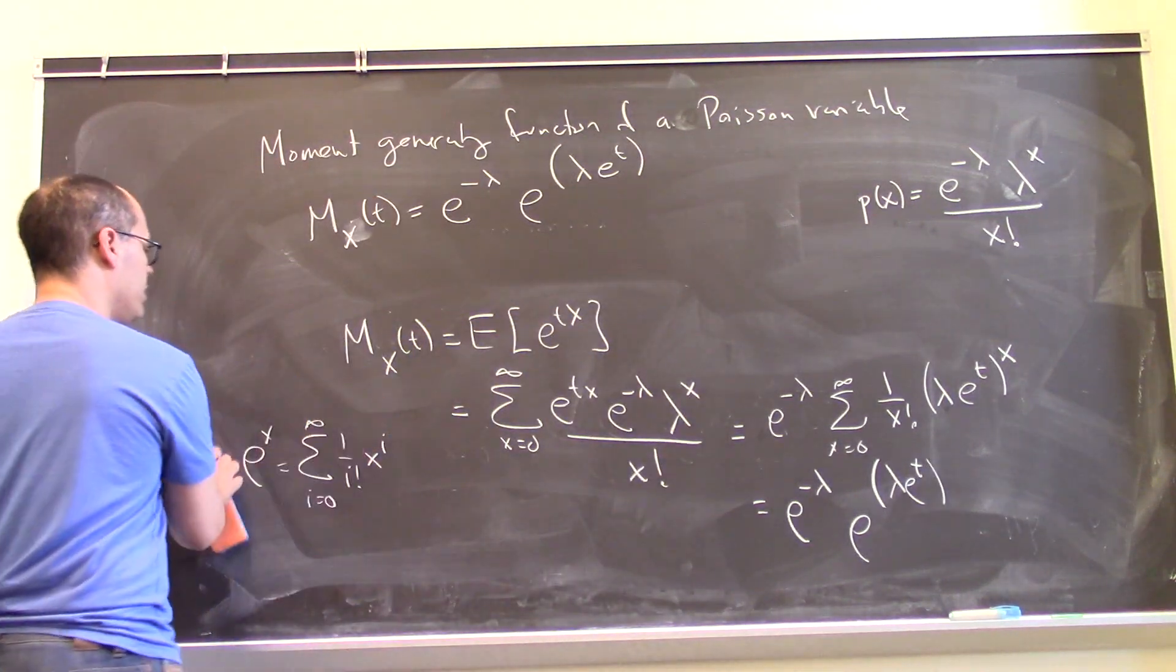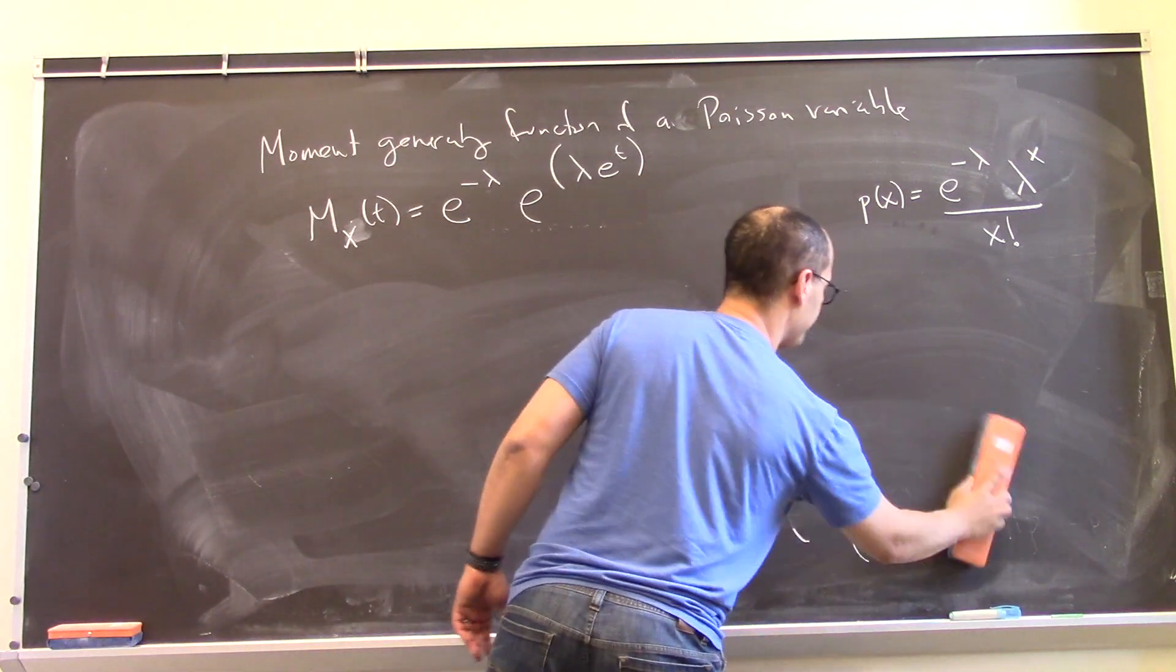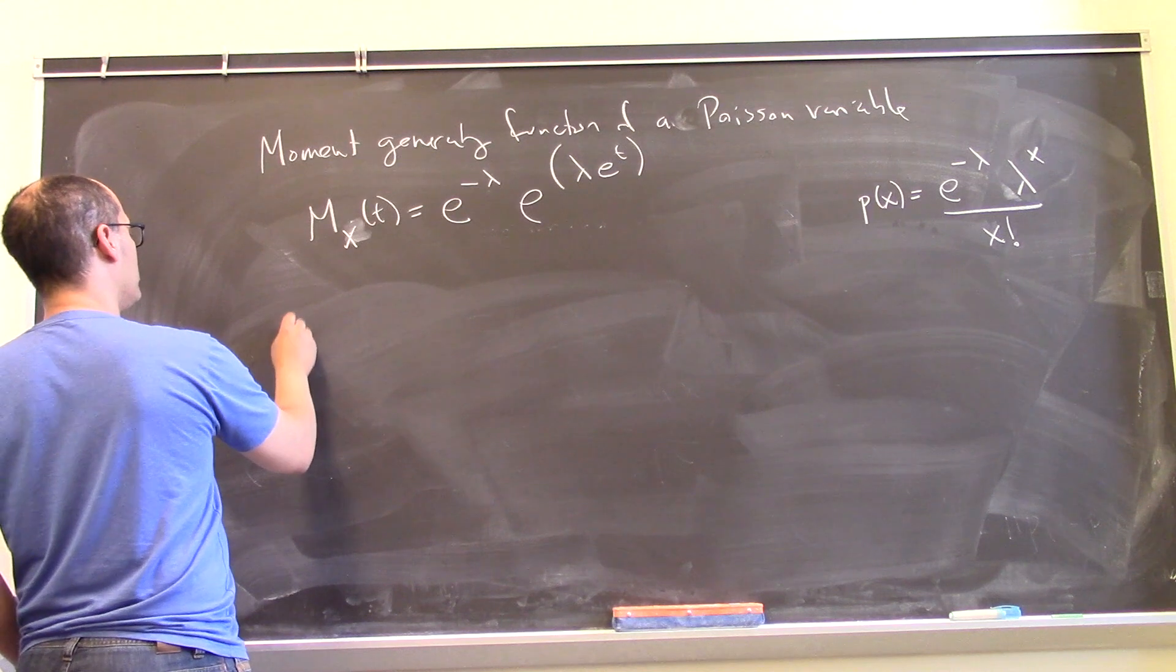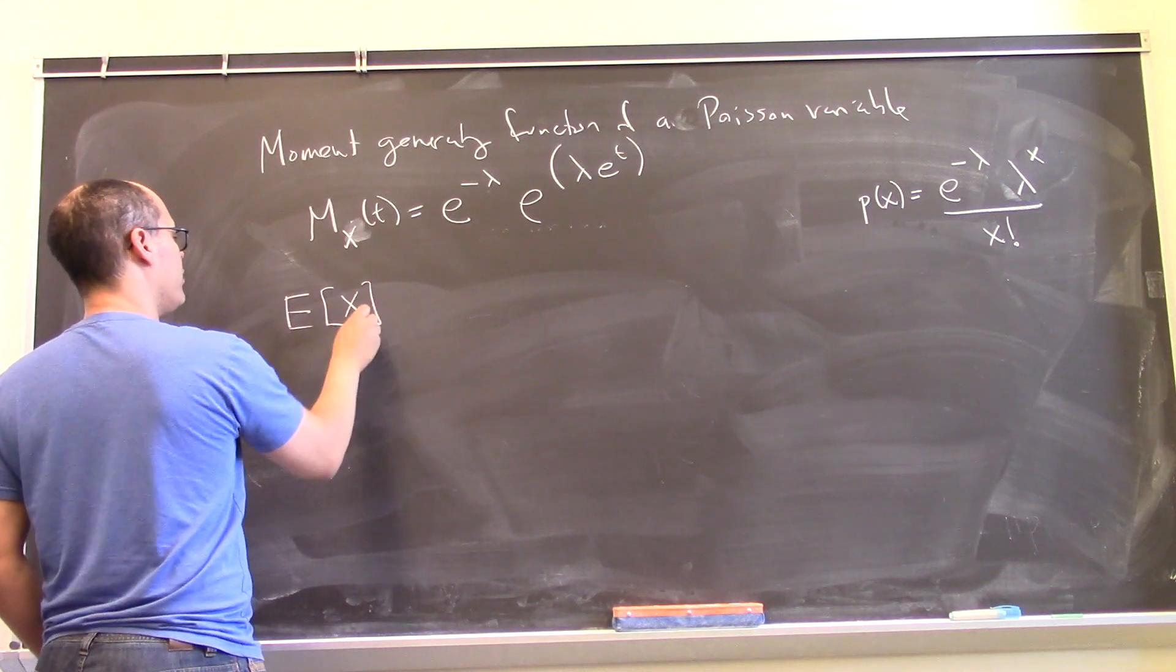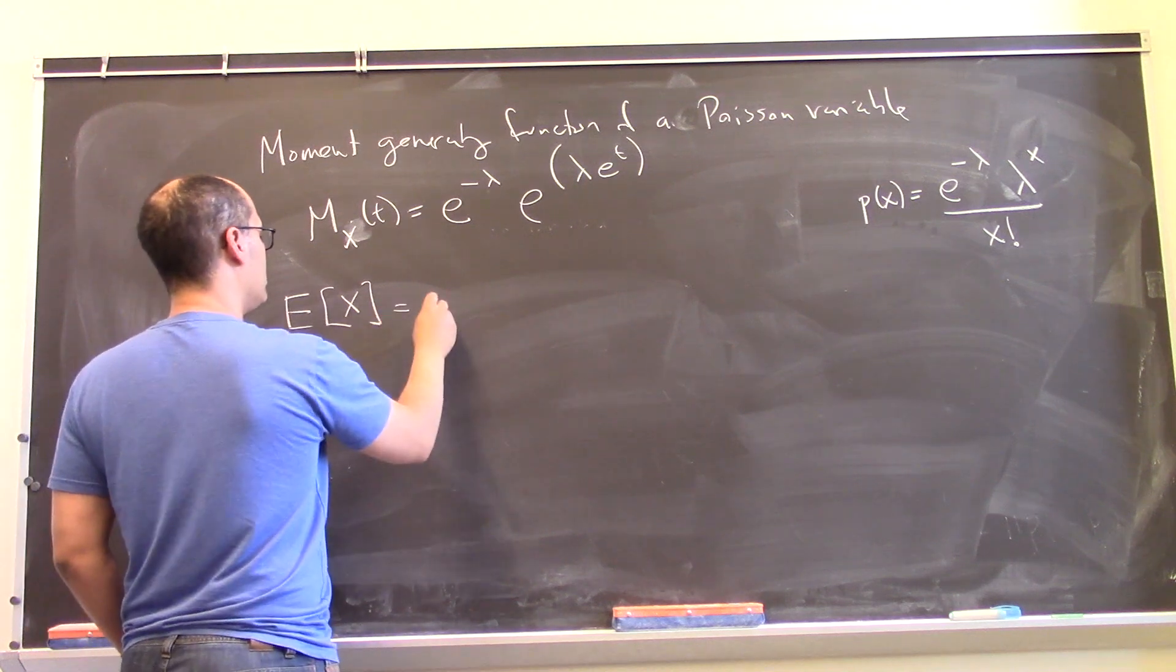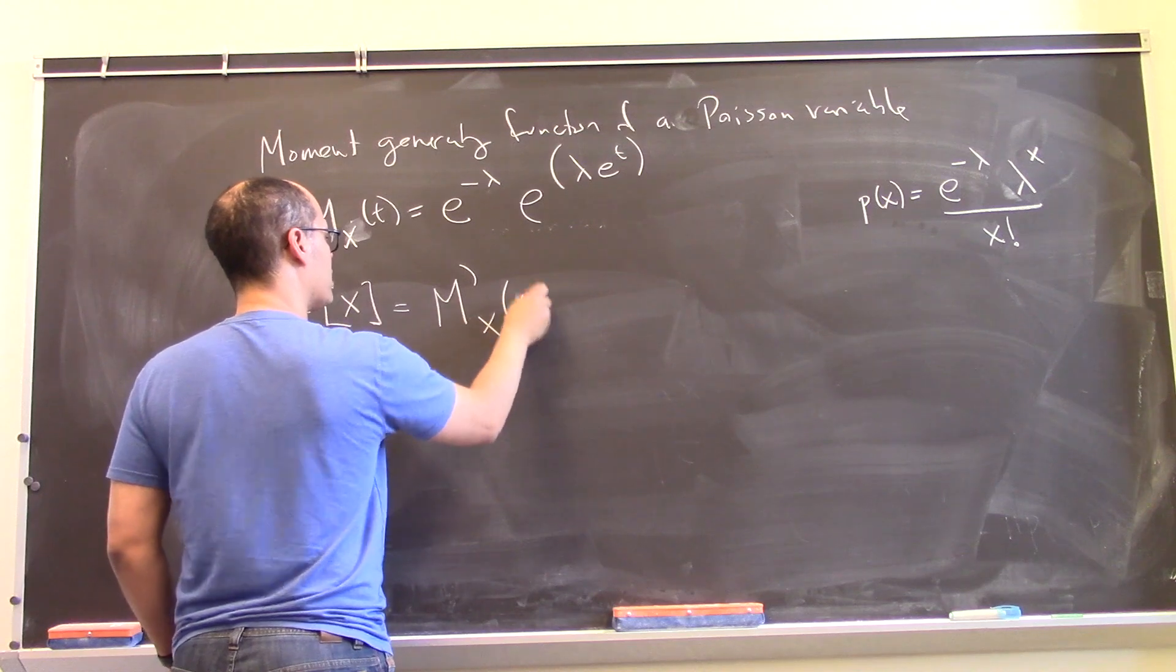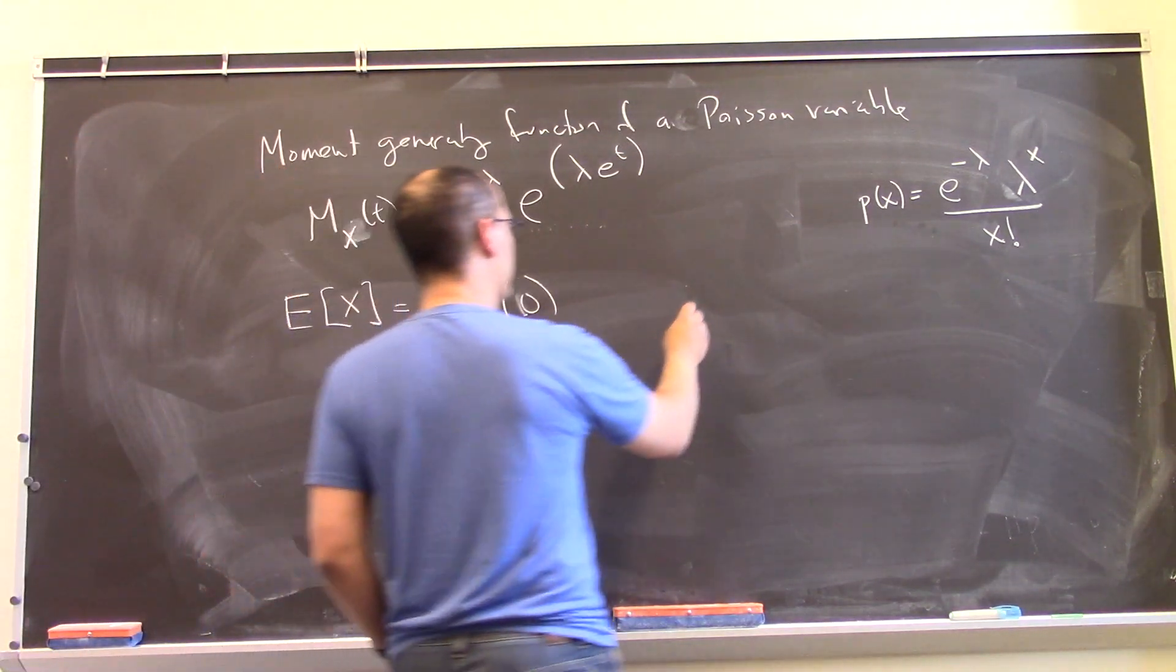Alright, so now let's go ahead and use that to calculate the mean and variance. So we have, for example, the expected value of x is the first derivative of the moment generating function evaluated at 0. So let's go ahead and take a look at the derivative of this.